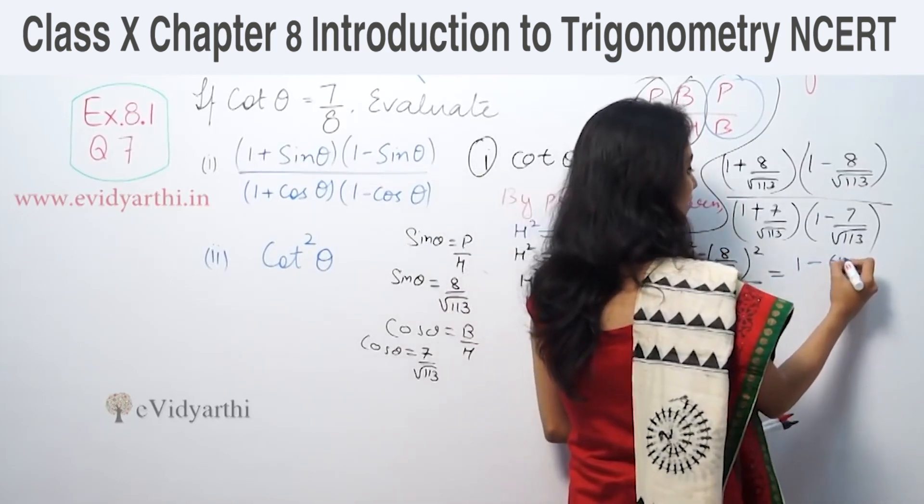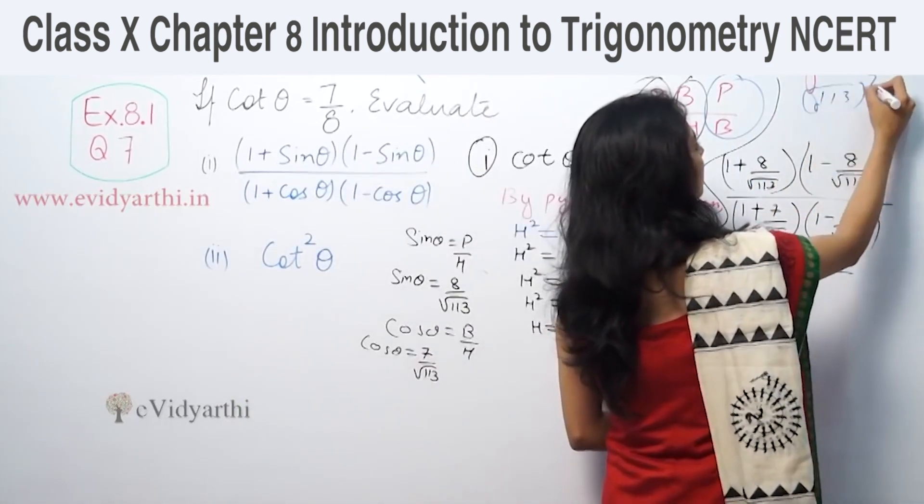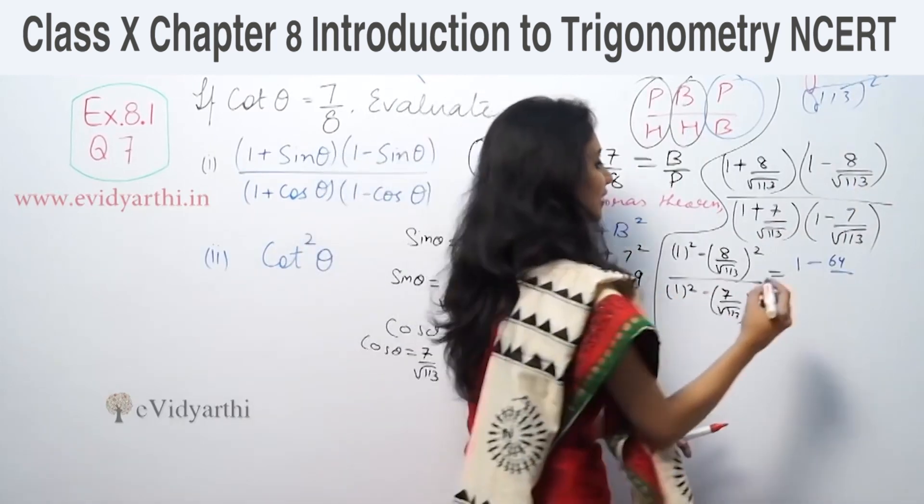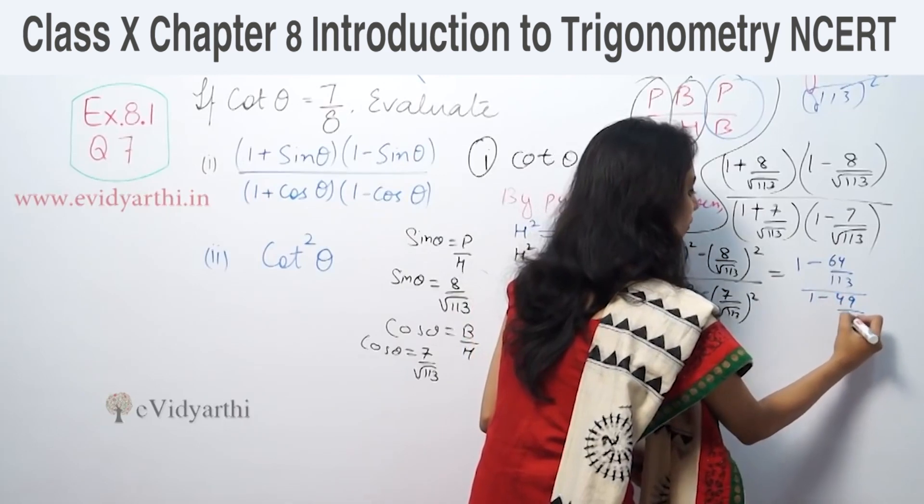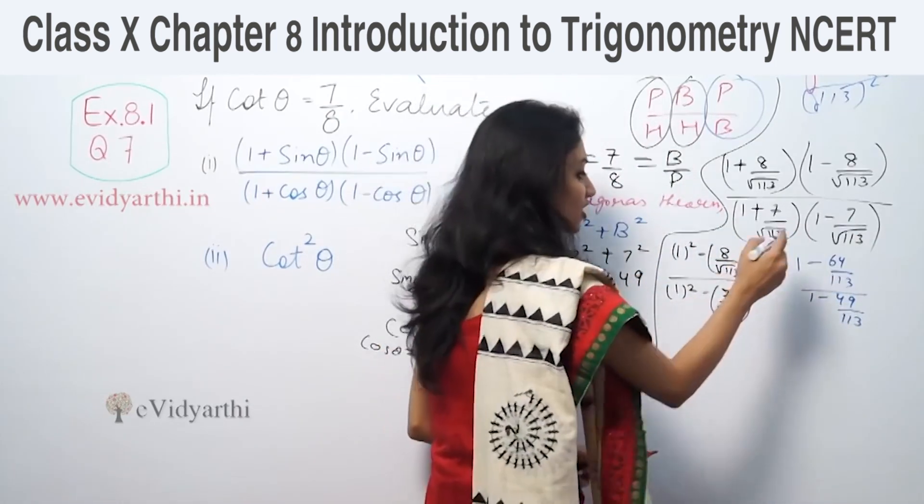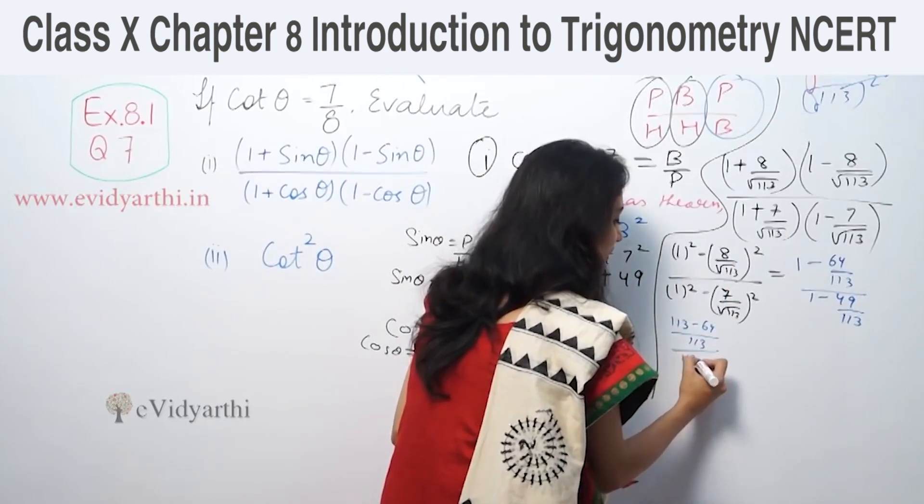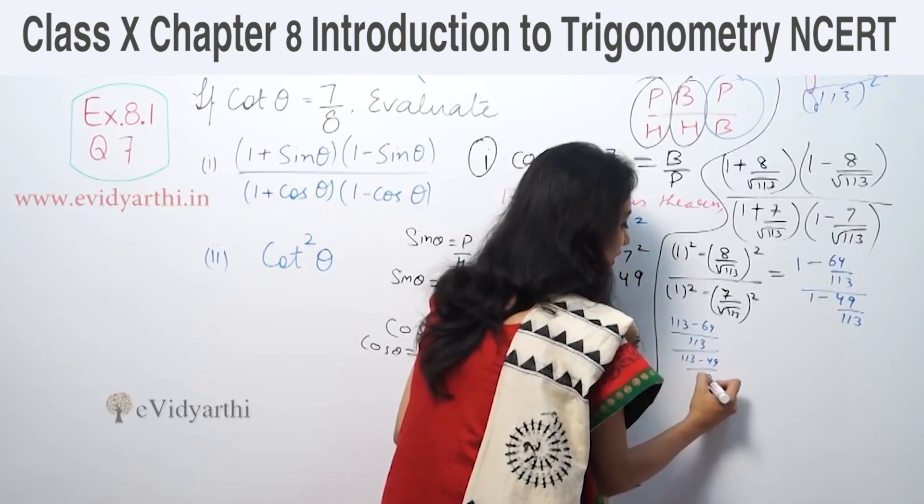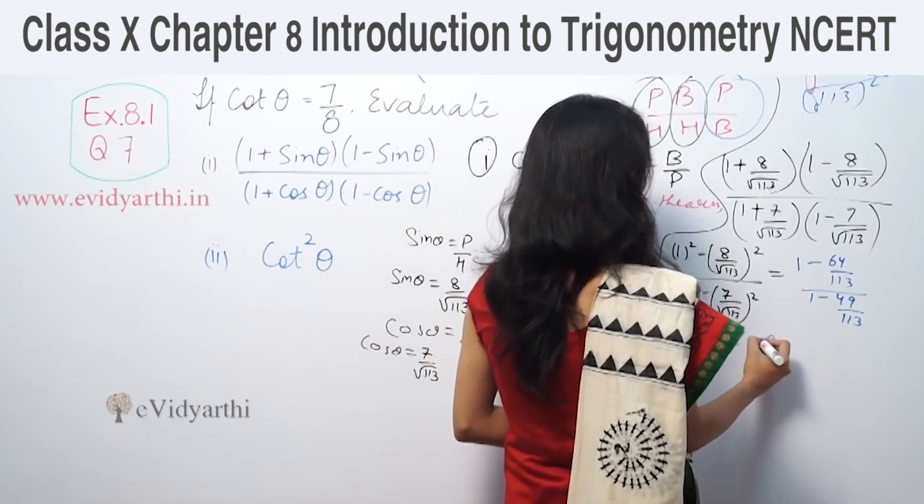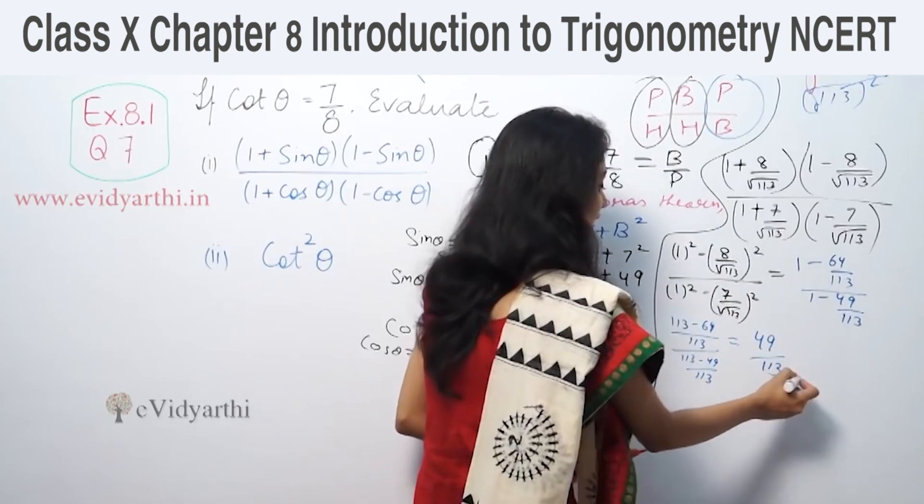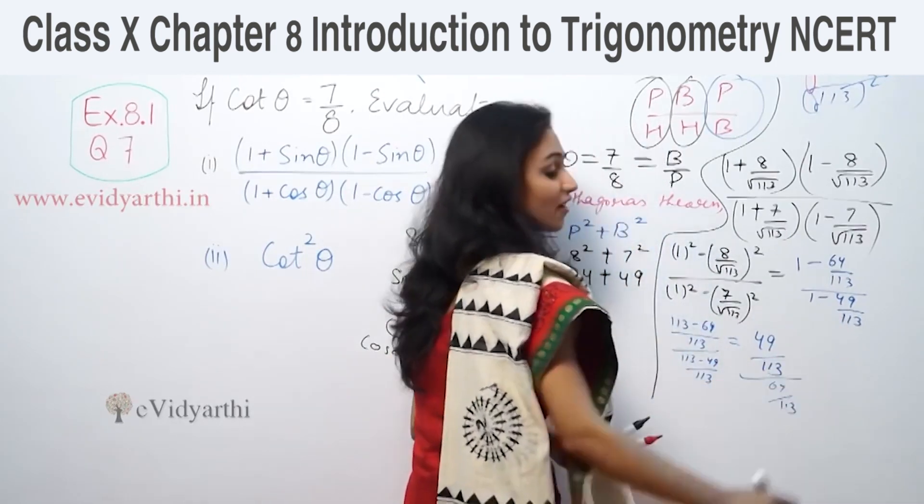1² is 1, which is 64 upon √113. When we square √113, the square root cancels and we get 113. So this becomes 113 minus 64 upon 113. 113 minus 64 is 49, giving us 49 upon 113.